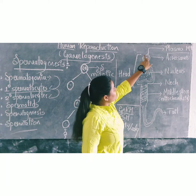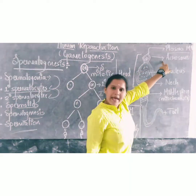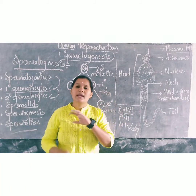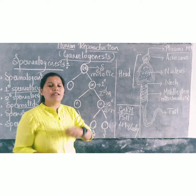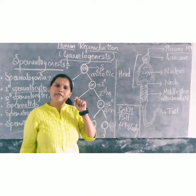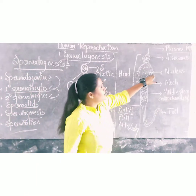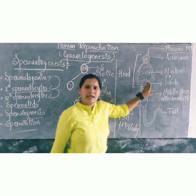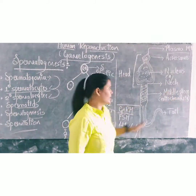Soon after that there is an elongated structure on the head called the acrosome. In this acrosome there are many digestive enzymes present, which help in dissolving the membrane of the egg cell so that it helps in the fertilization process. Soon after that, the nucleus, which is haploid in nature, contains the chromosomal material. And this is the neck part.